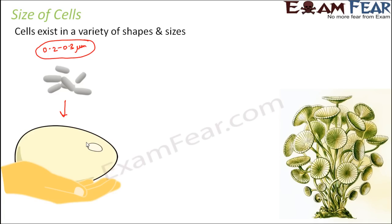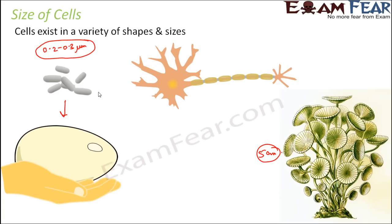When you talk about the length, there are certain cells which are quite long. For example, the marine algae Acetabularia has a height or length of almost around 5 centimeters. Again, the human nerve cell is one of the longest cells — length-wise it is about 1 to 2 meters. So when you talk about size, it can be very long, very big, or very small — the sizes vary greatly.